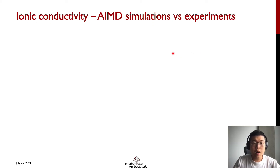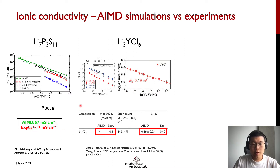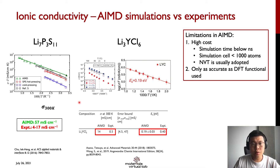However, there has been a gap between AIMD-simulated and experimentally measured ionic conductivities. Here I list two of the promising lithium superionic conductors. You can see that the room temperature ionic conductivity simulated by AIMD is a few times, or even more than 10 times higher than the experimental measurements. From our study, this gap can be traced back to limitations in AIMD simulations: the high computational cost and accuracy limited by the DFT functional used.